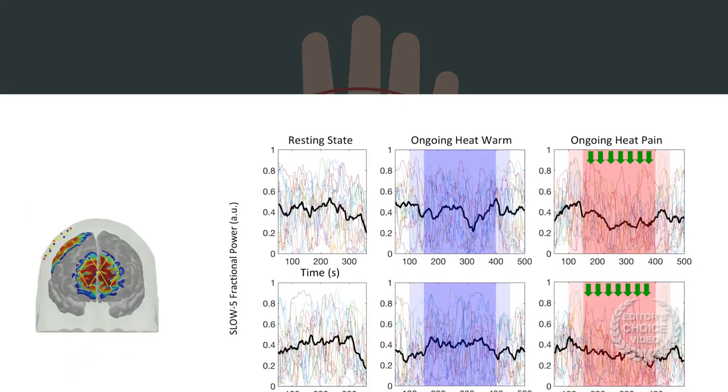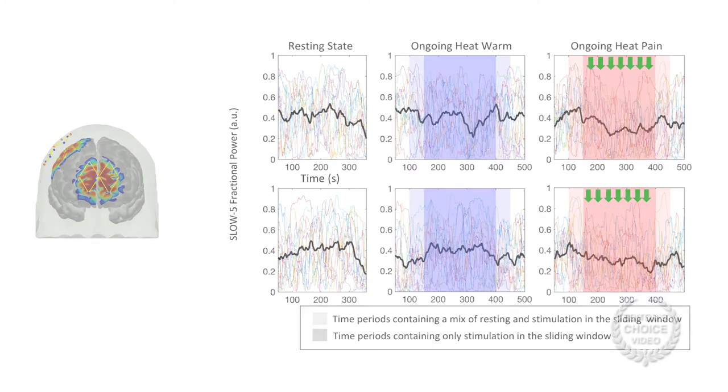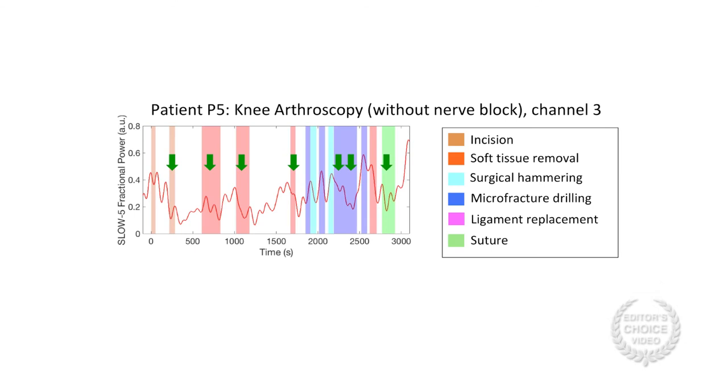Experiments revealed a decrease in the low-frequency F-NIRS signals in the awake group when exposed to pain-stimulating heat. A similar decrease was observed among patients undergoing surgery, suggesting that F-NIRS could communicate active nociceptive pain signaling.